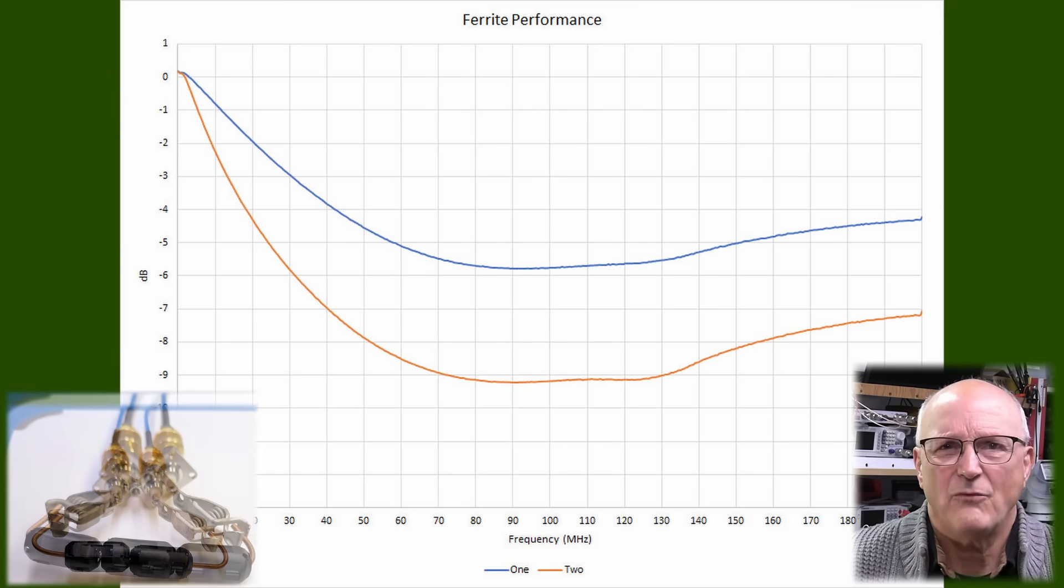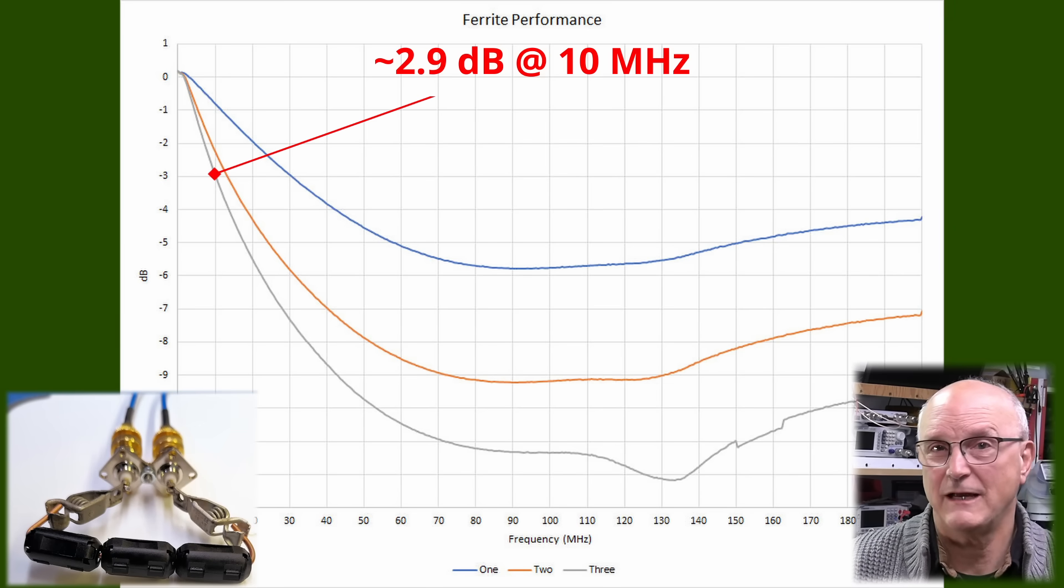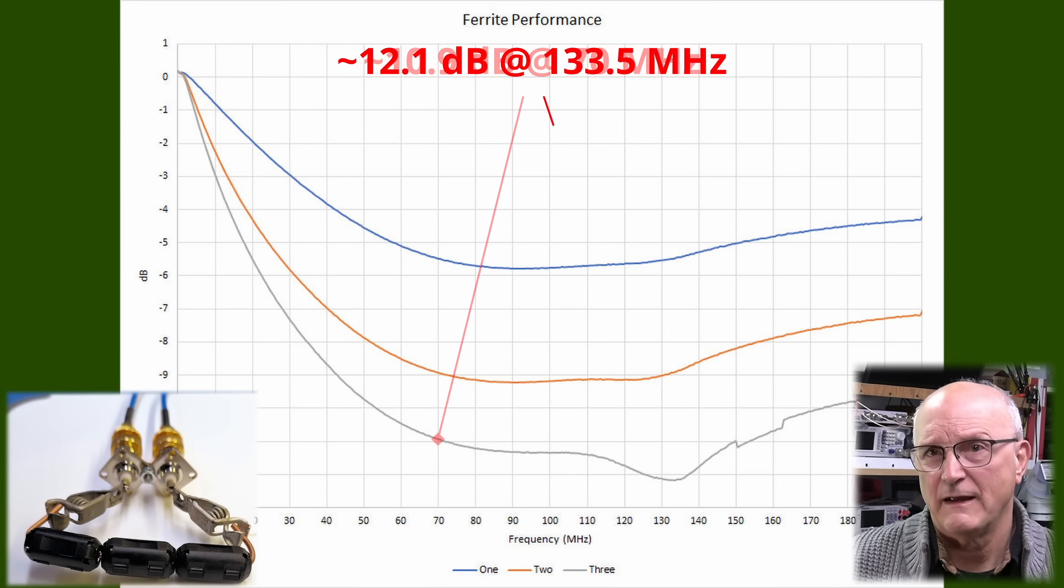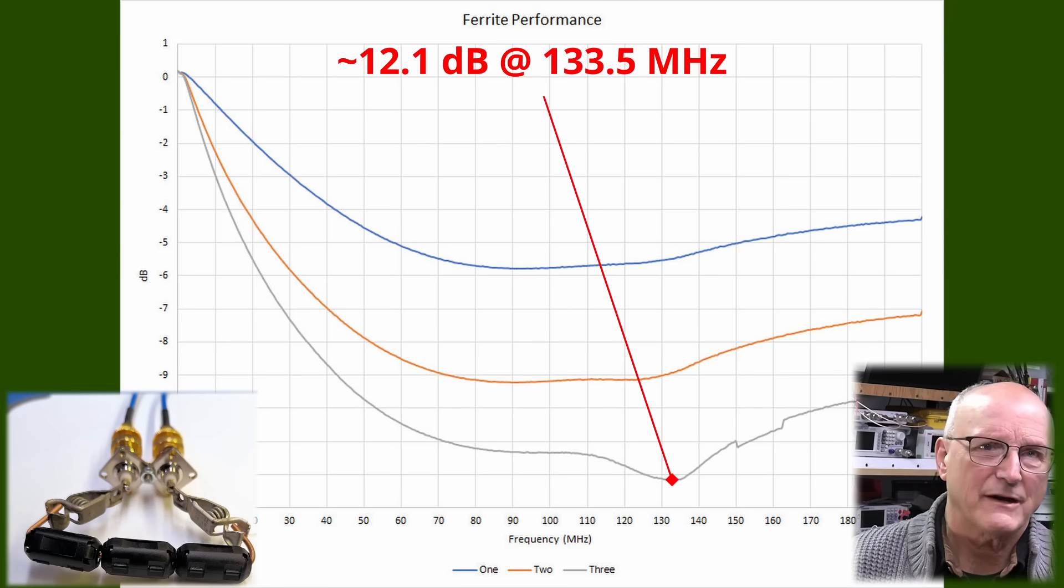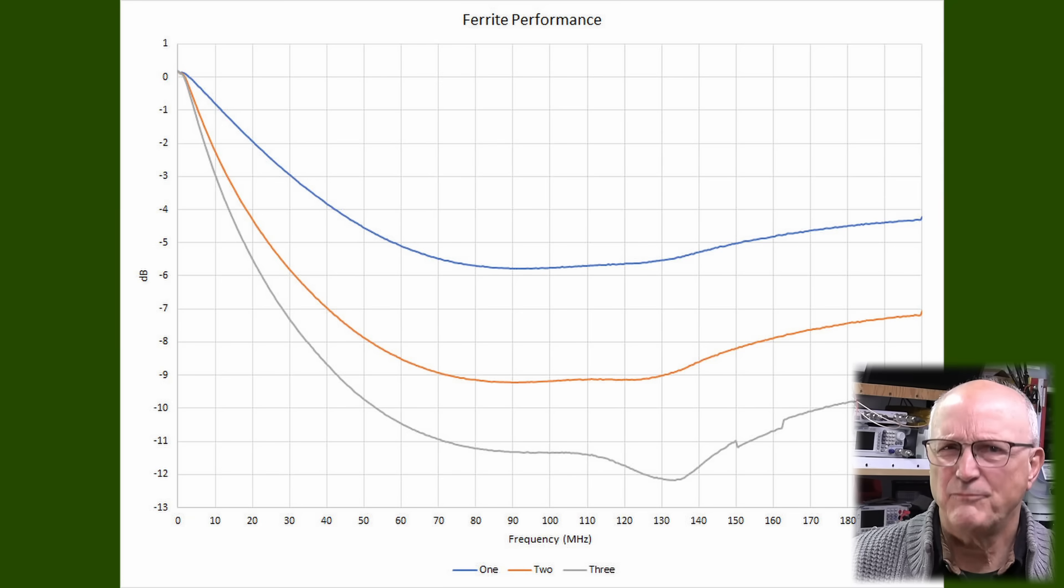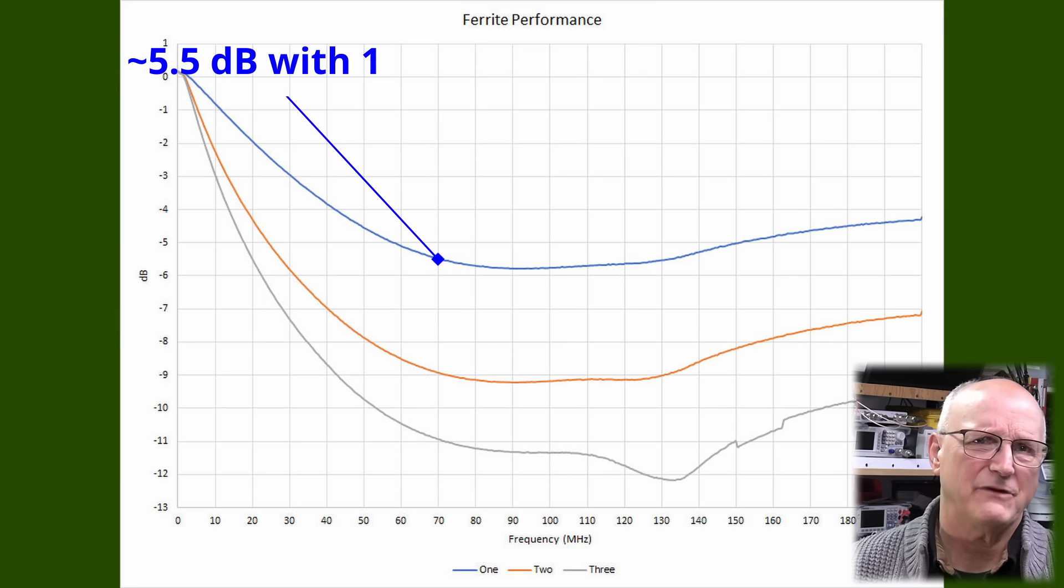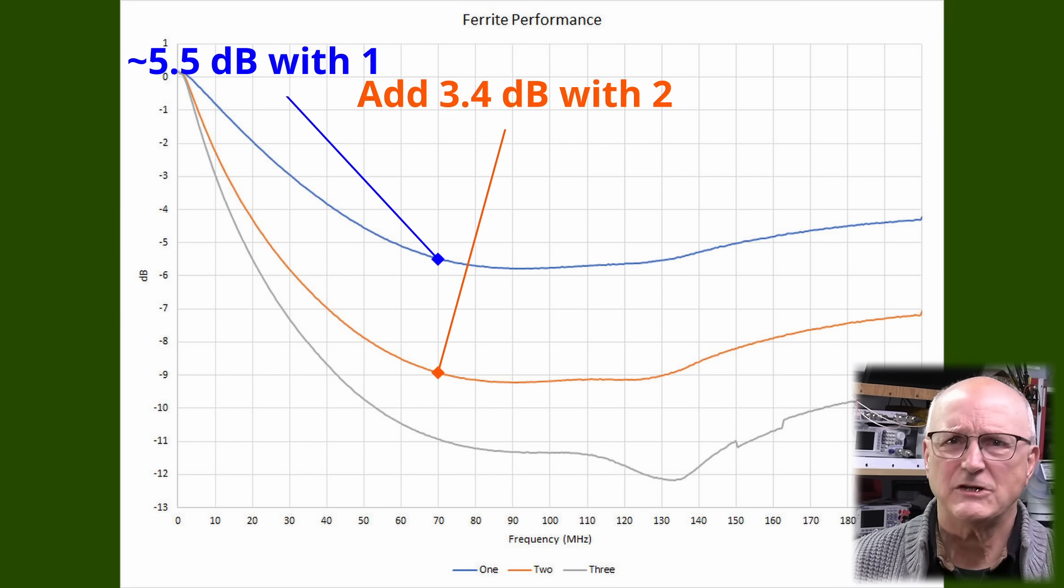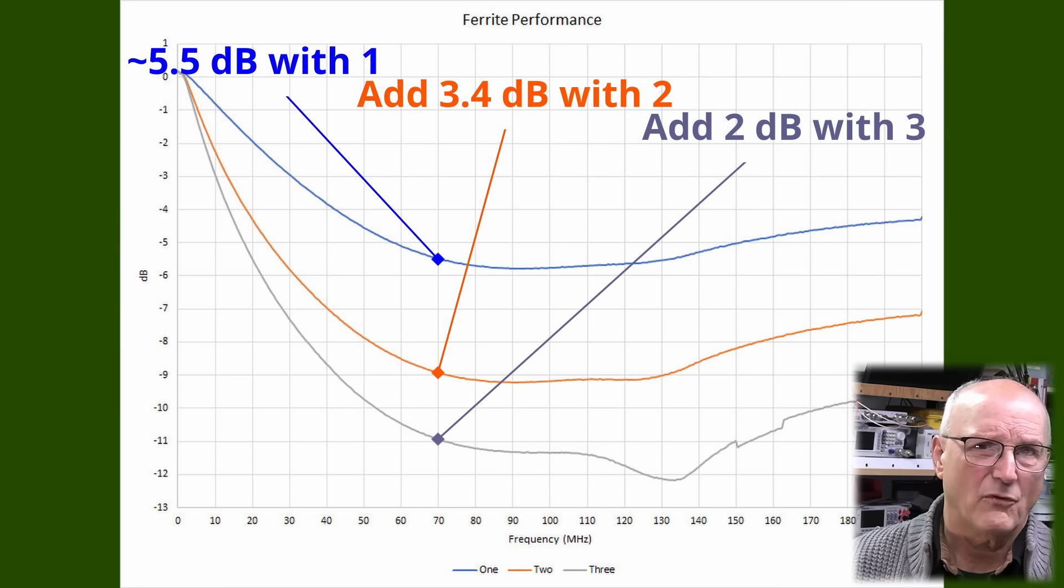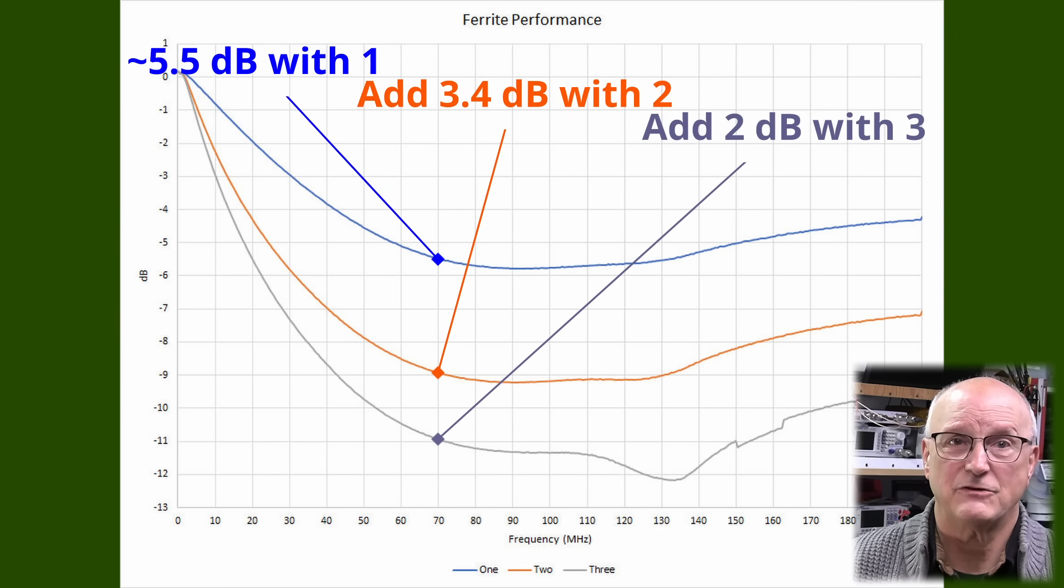And now what about three? Now the benefit is about 2.9 dB at 10 MHz, moving toward 10.9 dB at 70 MHz. And at 133.5 MHz, there is a 12.1 dB benefit. There seems to be the law of diminishing returns at work here. We got 5.5 dB at 70 MHz with one. We got an additional 3.4 dB with the second one. And then we got 2 dB more with a third. Each additional bead added to the mix provides less additional benefit.